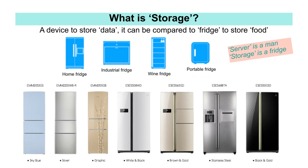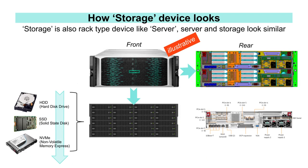Just as refrigerators have been divided into refrigerators for various purposes — such as home use, industrial use, and wine use — there are many different types of storage. Basically, it can be thought of as storing data so that the server can utilize it. Because the storage is also mounted on a rack, there is not much difference in appearance from a server. However, if there are a lot of disks installed on the front, it is most likely storage.